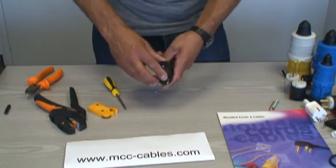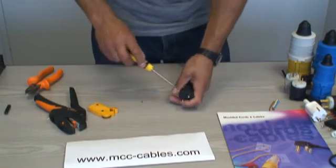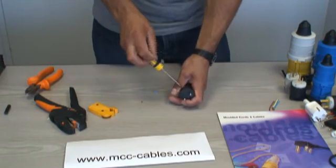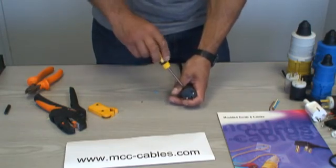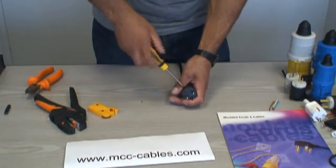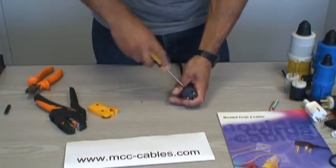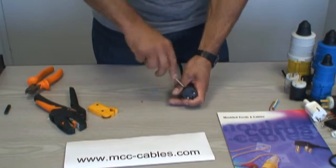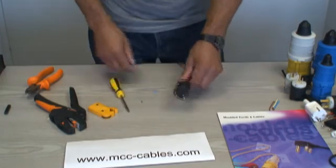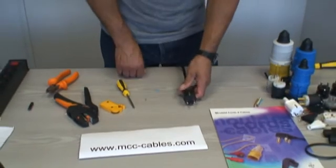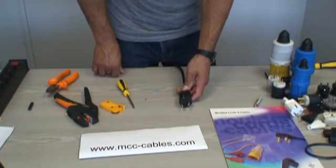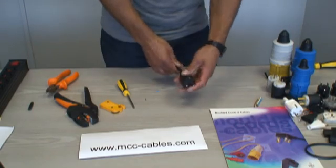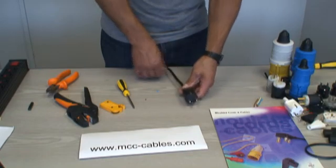Like so. Then on goes the outer cover. And there we have it, one wired Shuko plug, STK9. As I said before, all our wiring fact sheets are available on our website, mcc-cables.com, and you can find all the specs and how to wire up all our plugs online.